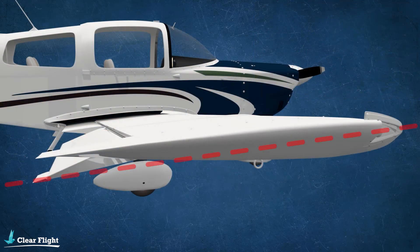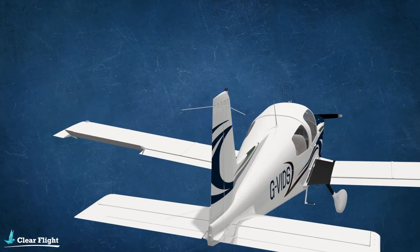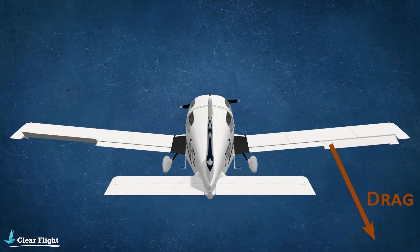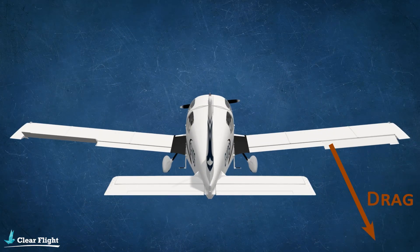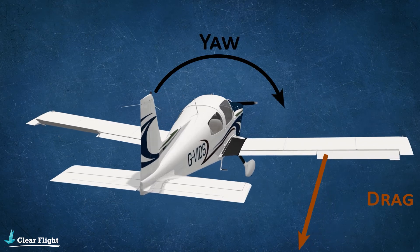As we know, any increase in lift is accompanied with an increase in induced drag, so the right aileron experiences more drag than the left aileron, and this results in a yaw in the direction opposite to the roll. This yaw is known as adverse aileron yaw.